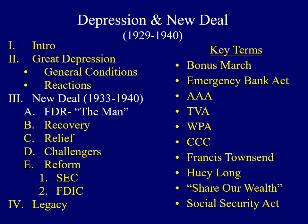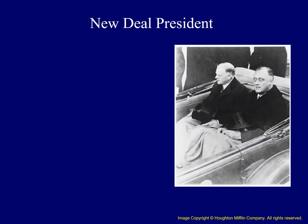Now we can begin a discussion of the New Deal by exploring the profile of its architect, Franklin Roosevelt. Here we see a famous photograph of Franklin Roosevelt and outgoing President Herbert Hoover on the day of Roosevelt's inauguration. Roosevelt had an interesting background — he was from New York, from a wealthy family, and was also a distant relative of Theodore Roosevelt. As an adult, he suffered from polio, which was really unique, and while the American people knew this, they didn't know the extent of his disability.